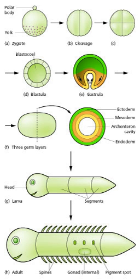Cell differentiation relates specifically to the formation of functional cell types such as nerve, muscle, and secretory epithelia. Differentiated cells contain large amounts of specific proteins associated with the cell function.